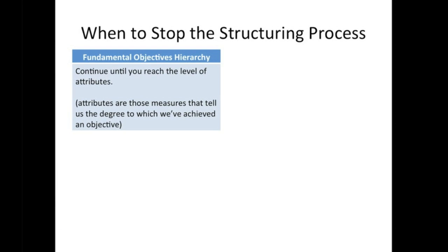You continue structuring your fundamental objectives hierarchy until you reach the point where there are no more sub-objectives. You've now reached the level of attributes, sometimes called measures, metrics, or measures of effectiveness. Measures are the evaluation criteria that tell us the degree to which we've achieved a particular objective. We'll talk about metrics in another video.